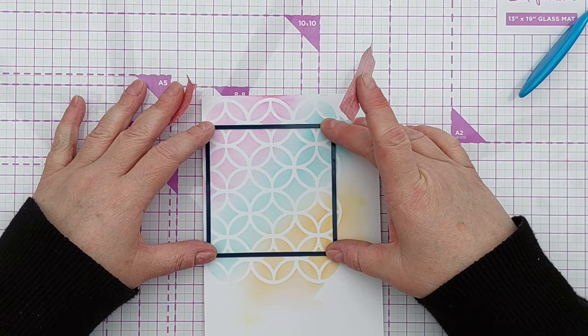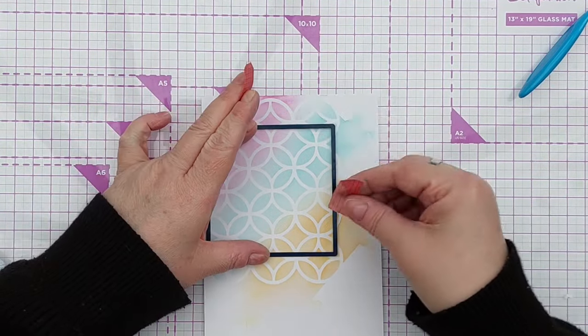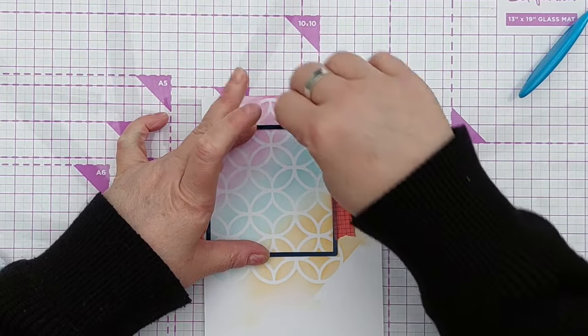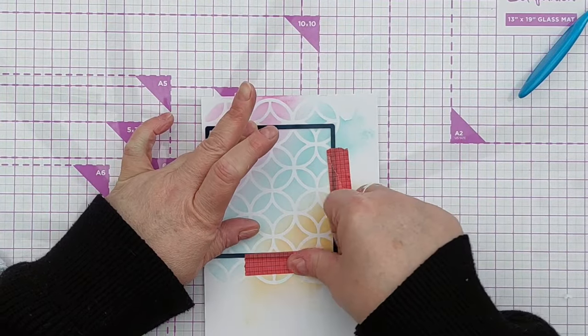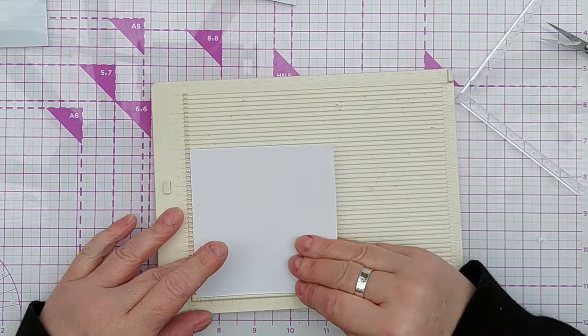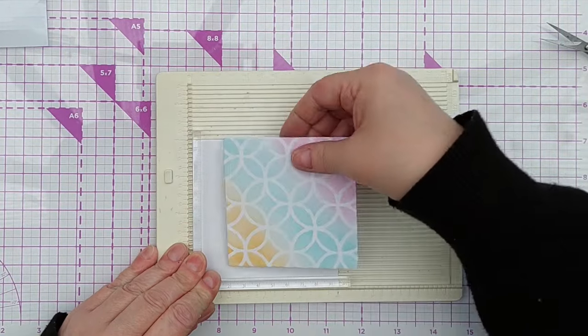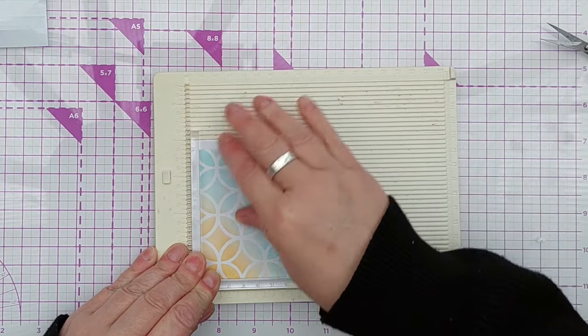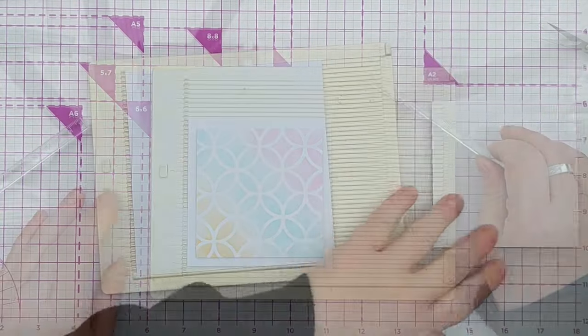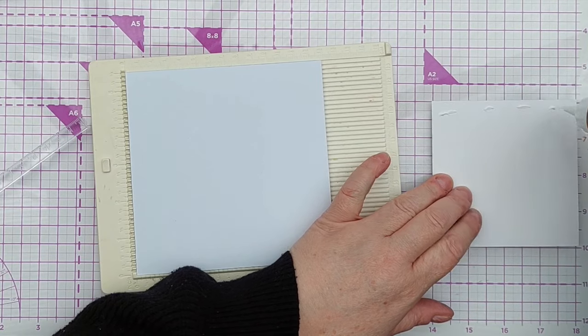So I didn't want the whole piece, I wanted just a square of it, so I cut a square using my square die. Then I added this to a slightly bigger square of smooth white cardstock that I'd cut using the next size up in the square die set. To help me get everything lined up, I'm using corner positioners and my scoreboard.